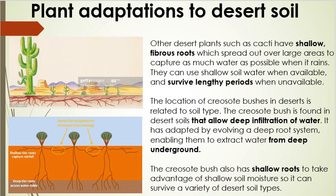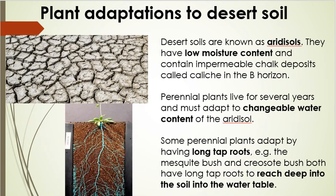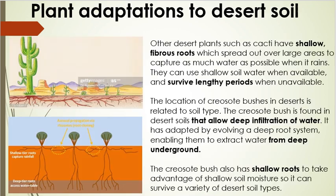The creosote bush has a particularly interesting dual root adaptation. It is found in desert soils that allow deep water infiltration, and it has evolved a deep root system to extract water from deep underground. But the creosote bush also has shallow roots that cover a large radius, allowing it to take advantage of soil moisture at a shallow level across a wide area — again, the swimming pool versus cup analogy applies.